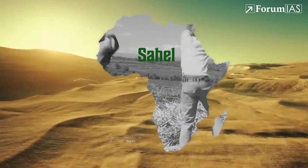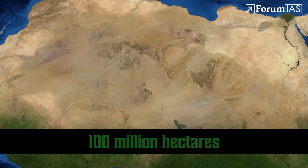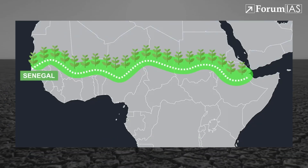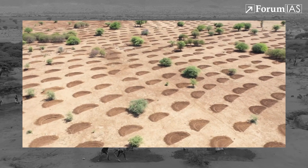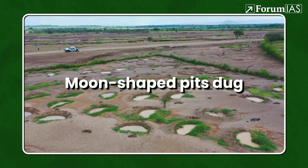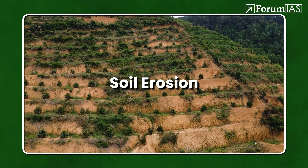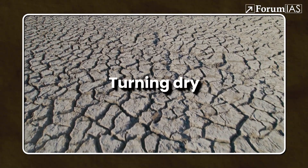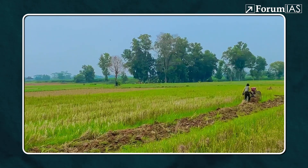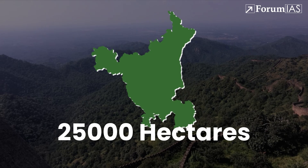Across the Sahel region in Africa, one of the boldest nature-based solutions is underway — the Great Green Wall. It's an ambitious project to restore 100 million hectares of degraded land by planting a mosaic of greenery across 8,000 kilometers from Senegal in the west to Djibouti in the east. One of the most effective techniques being used is called zai pits or half-moon bunds — crescent moon-shaped pits dug along the contours of sloping land that trap rainwater, reduce runoff, and prevent soil erosion. Over time, they allow moisture to soak into the ground, turning dry, cracked earth into fertile planting beds. Farmers often fill them with compost and seeds, giving degraded land a second life.